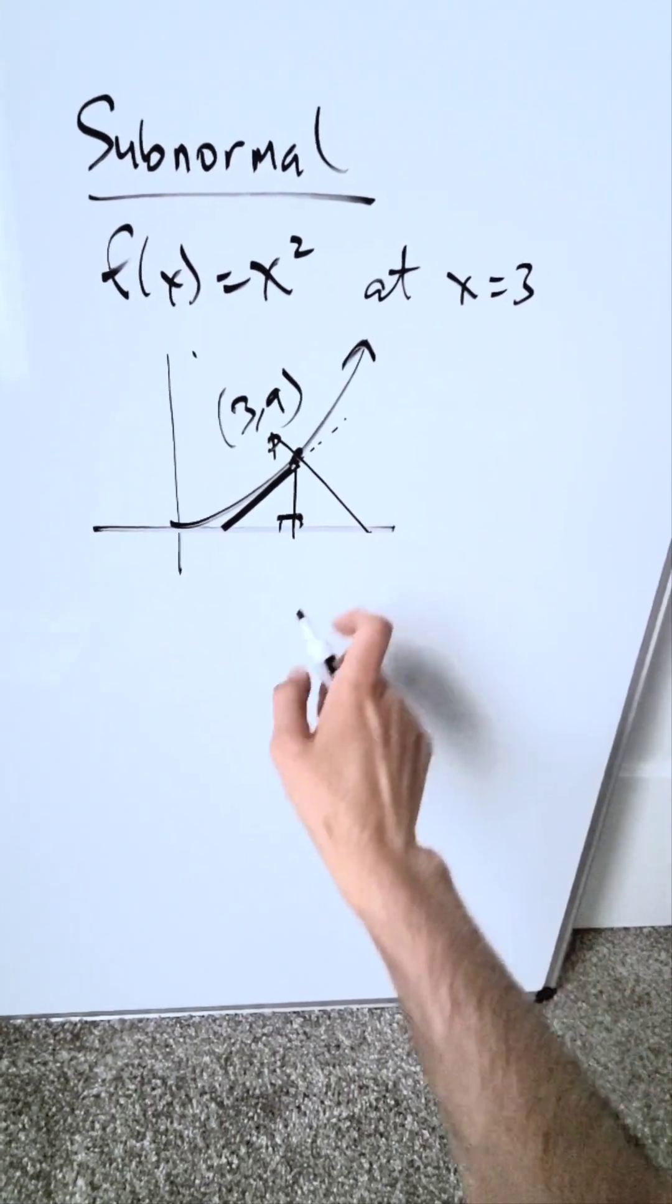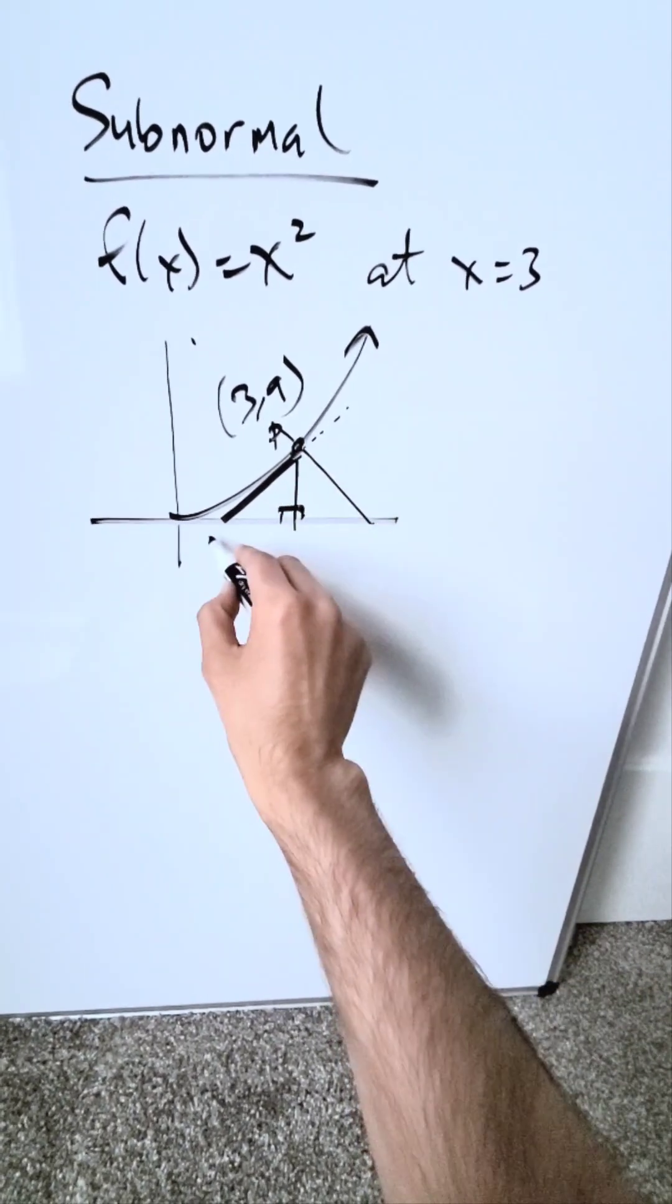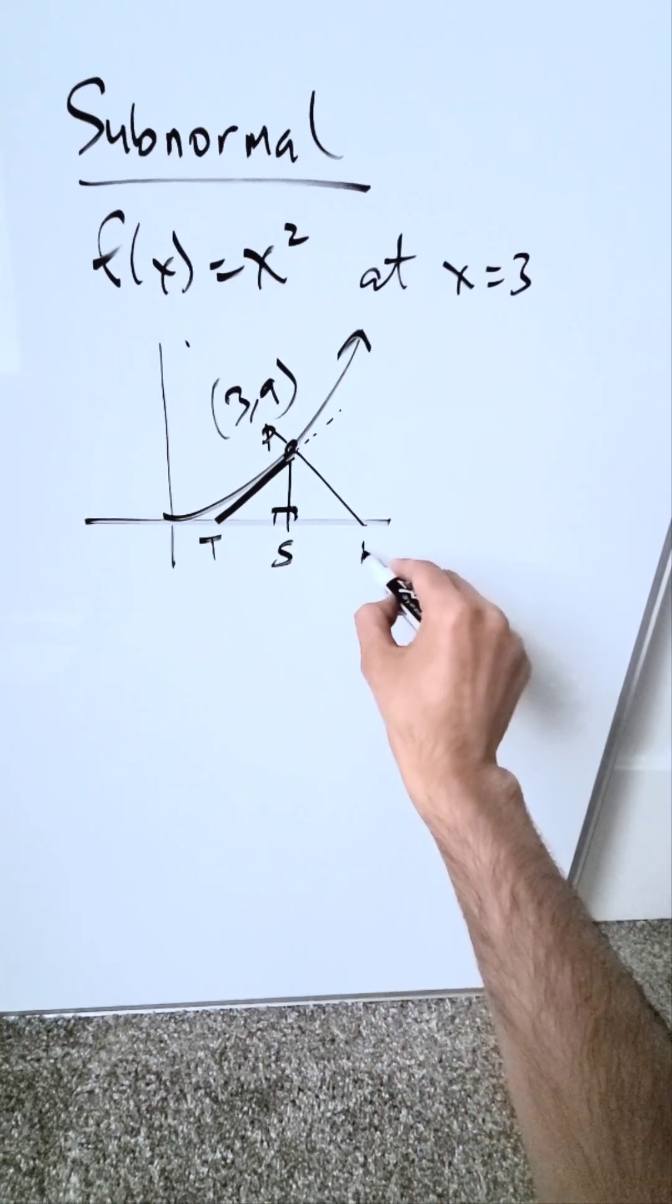This is going to be cut off right here at the x-axis. I'm labeling this point P as you know. This point here is T. This here is S. This here is N.